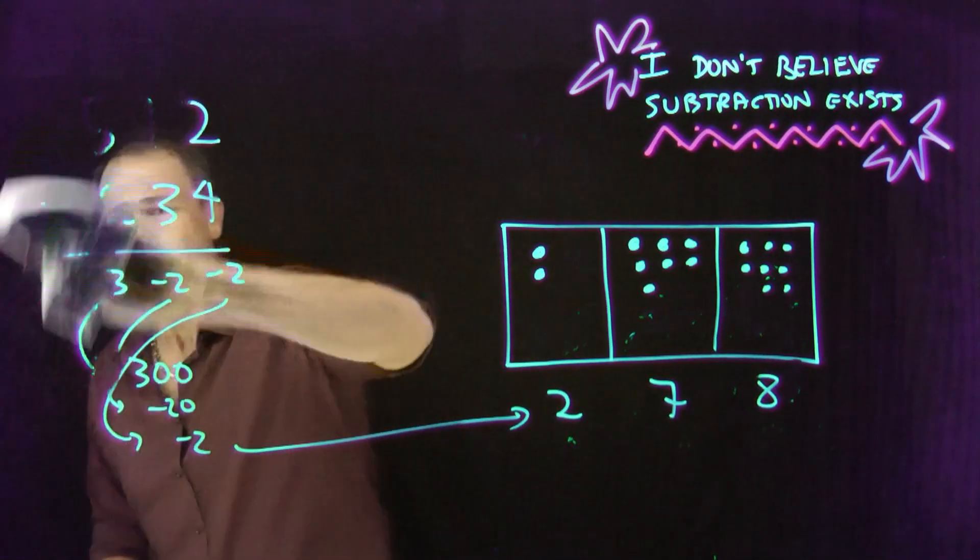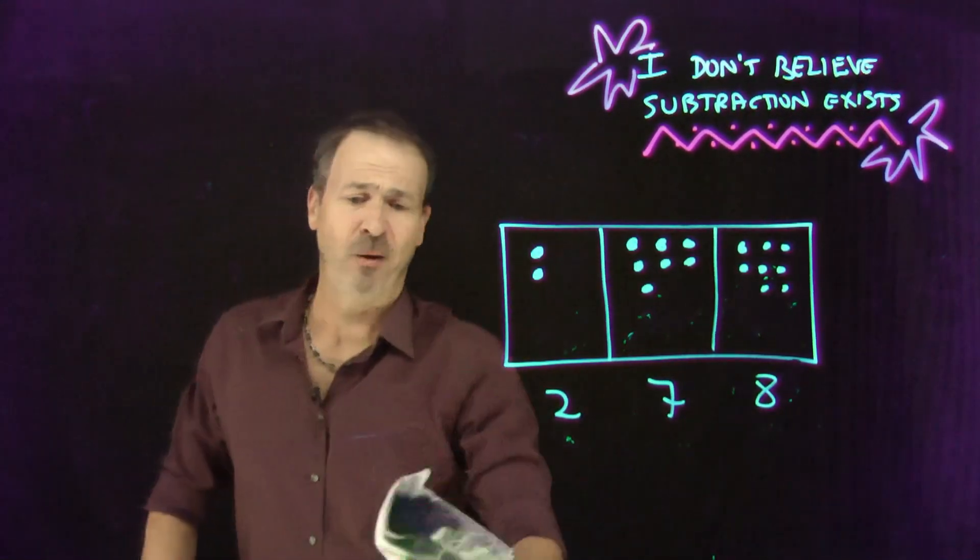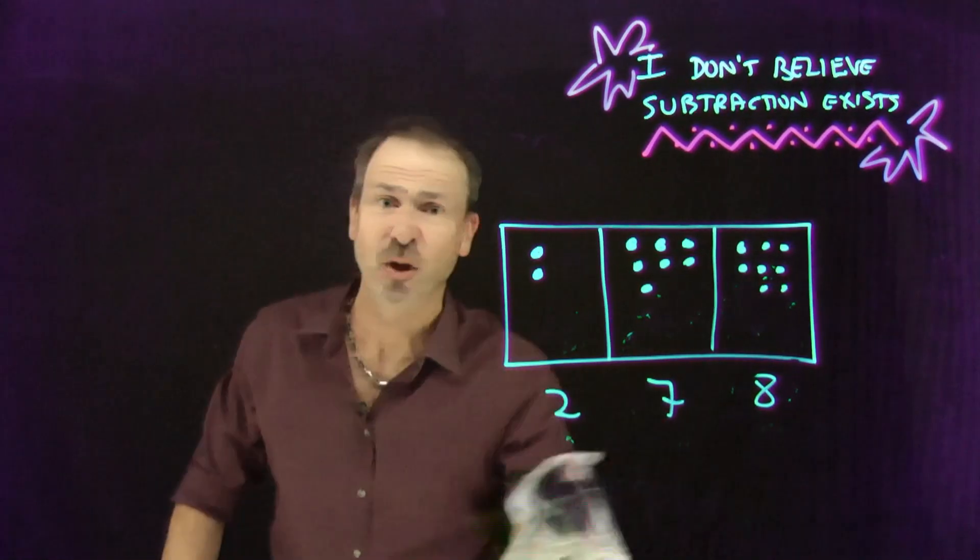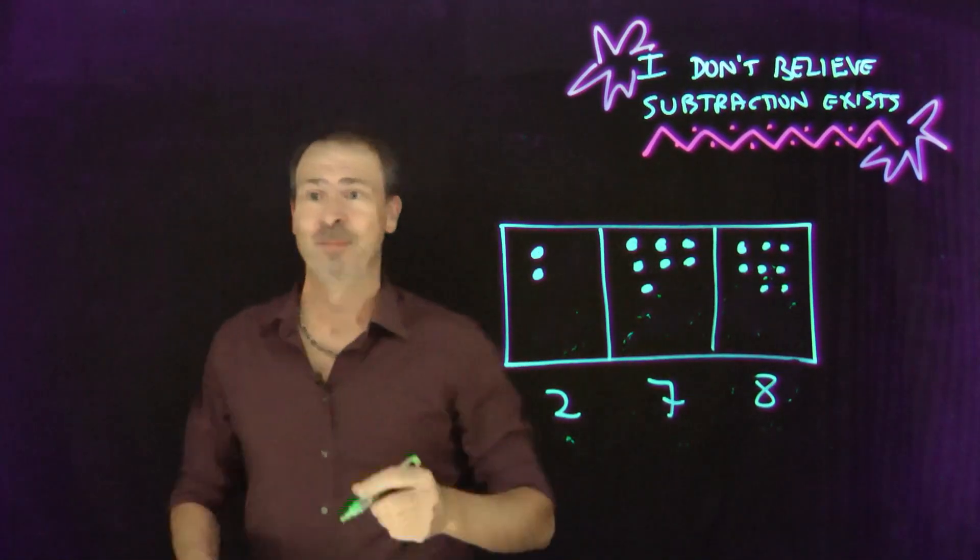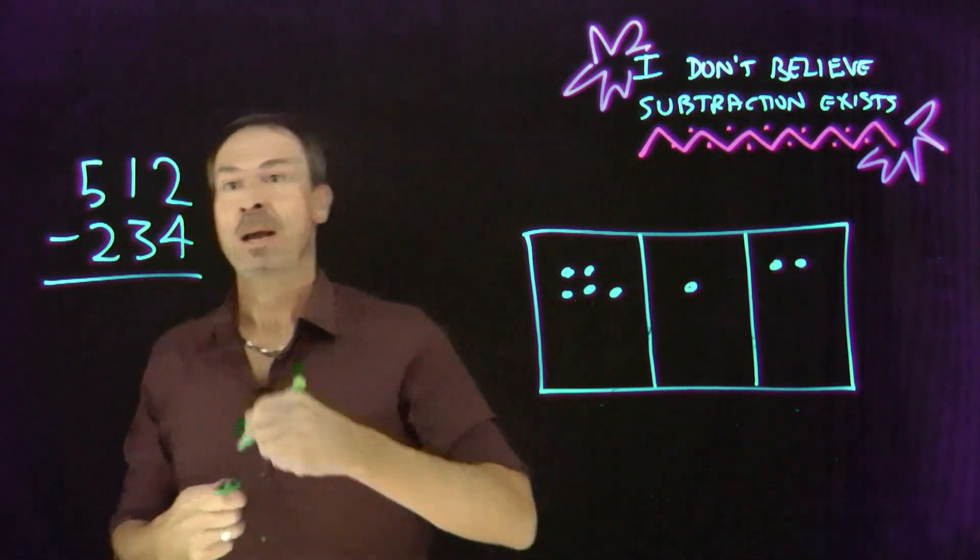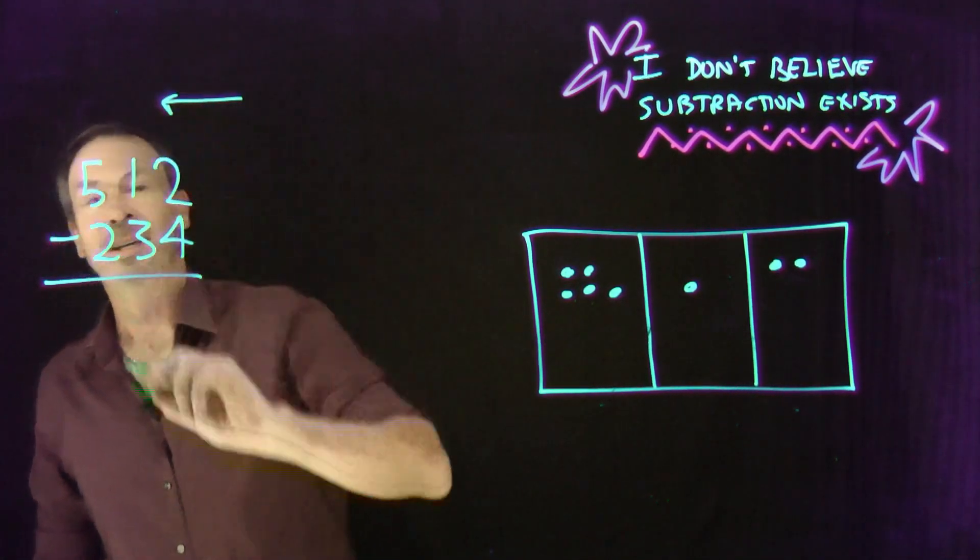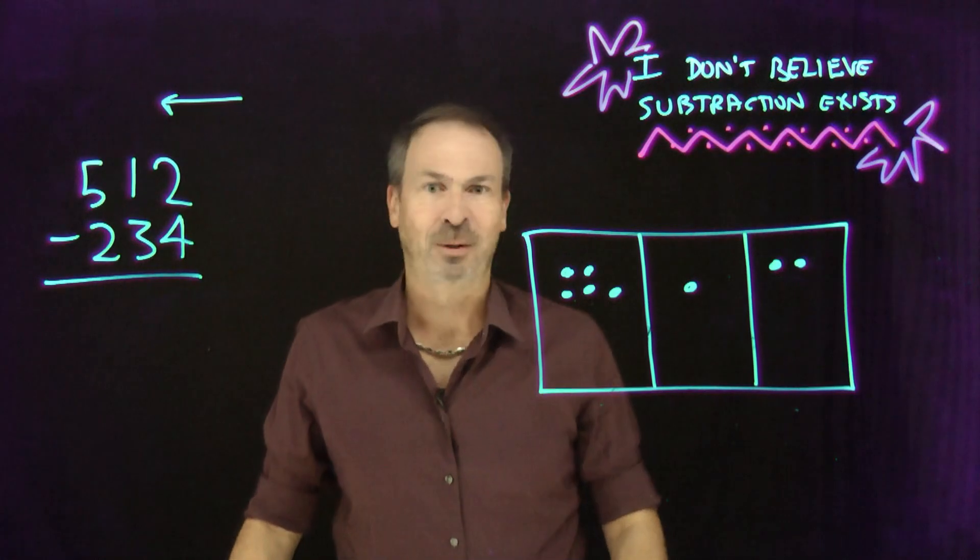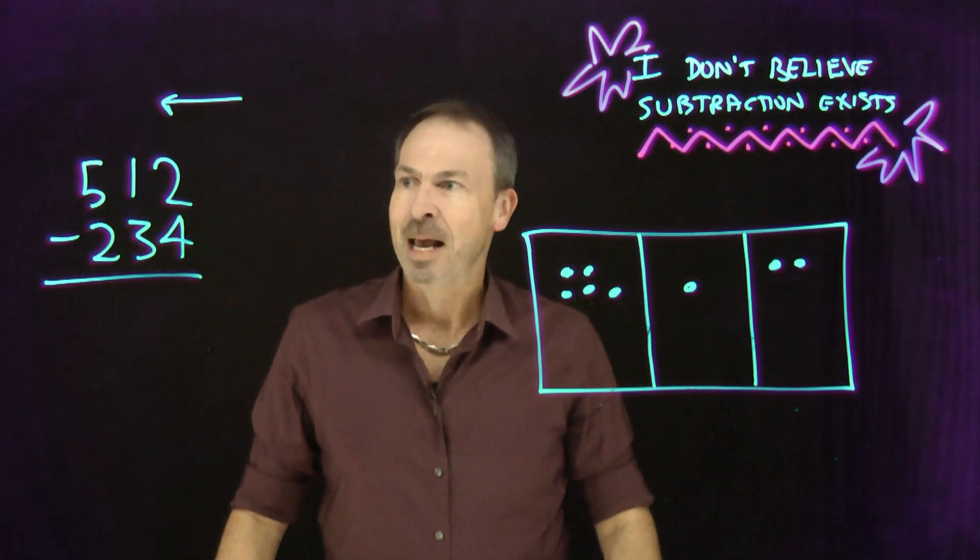And in fact, even the standard algorithm people have been taught for decades, in fact centuries, is doing exactly this. Left to right, like I want to do, but actually go right to left, opposite how we're taught to read in our schoolroom classes, at least I was in Australia.